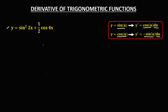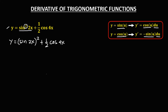For this given, first we need to rewrite the function. So we have y equals sine 2x, with the exponent placed outside, to the power 2, then plus one-half cosine 4x.